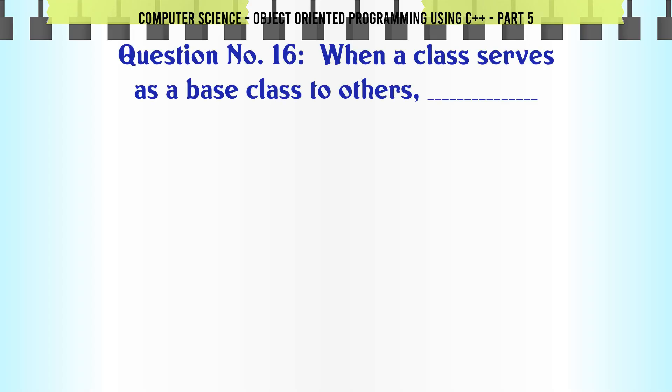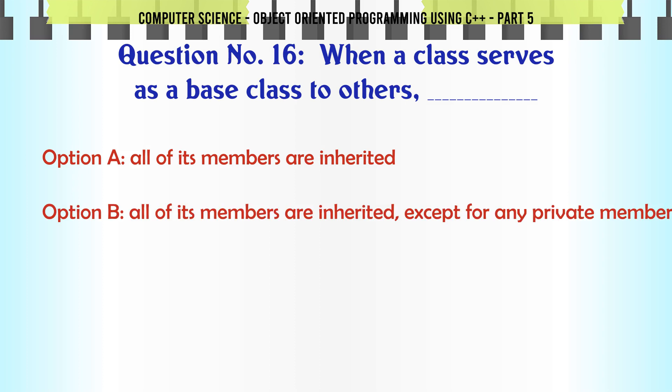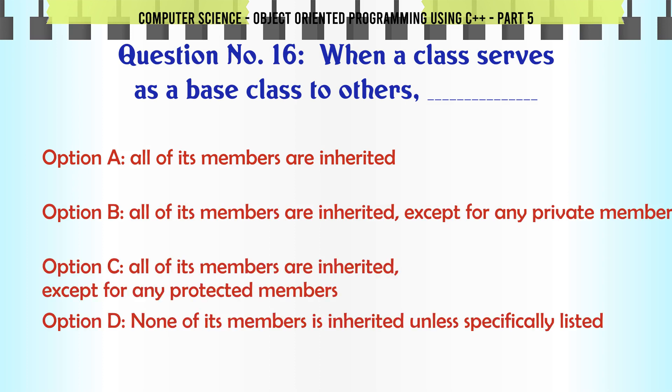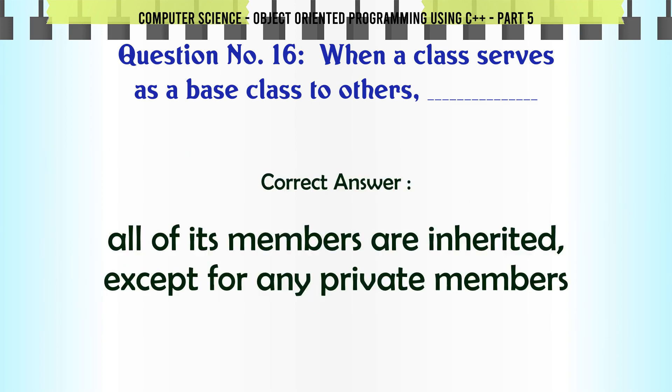When a class serves as a base class to others. A. All of its members are inherited. B. All of its members are inherited except for any private members. D. None of its members is inherited unless specifically listed. The correct answer is: All of its members are inherited except for any private members.